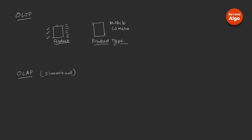In the OLTP database, these two tables are obviously connected — the product type key flows into the product table as a foreign key. Now, if you take this example and try to build an OLAP system, you have basically two choices. You could create two different dimension tables for the product and product type, or you could design your OLAP system as a star schema where you combine the product and product type tables together into a single dimension table.